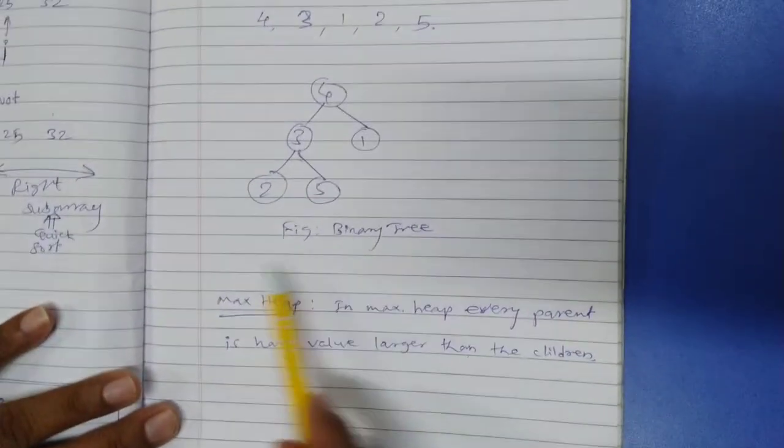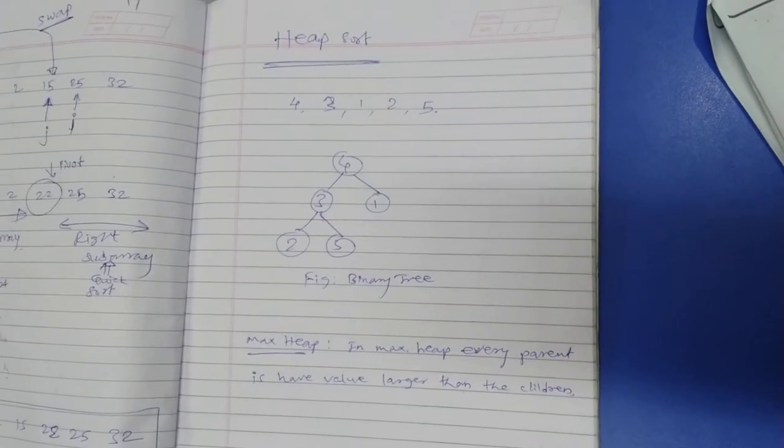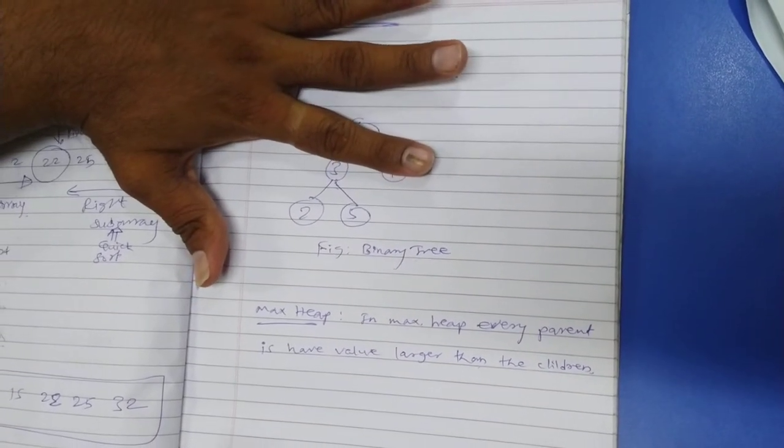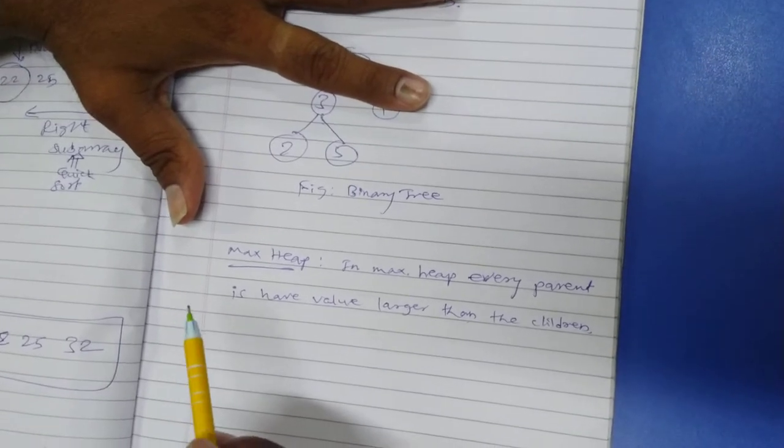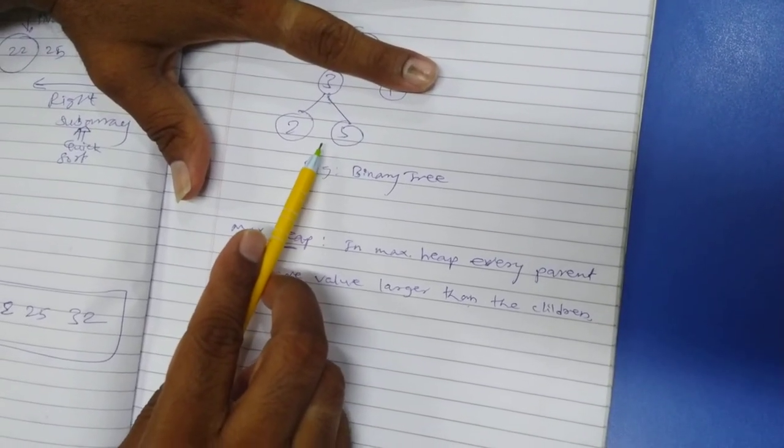Now the job is to convert this binary tree into MaxHeap. Is it a MaxHeap? Just focus on the lower part of this diagram. No. Now to prepare it as a MaxHeap, we need to do certain adjustments. So we need to swap the position of 3 and 5. Yes, get it?